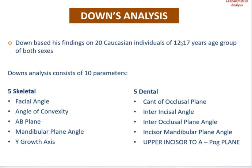We shall now discuss Downs' analysis. Downs' findings were based on 20 Caucasian individuals aged 12 to 17 of both sexes. Downs' analysis consists of 10 parameters — 5 skeletal and 5 dental. The skeletal parameters are: facial angle, angle of convexity, AB plane, mandibular plane angle, and Y growth axis. The 5 dental parameters are: cant of occlusal plane, interincisor angle, incisor to occlusal plane angle, incisor mandibular plane angle, and upper incisor to A-Pogonion plane.